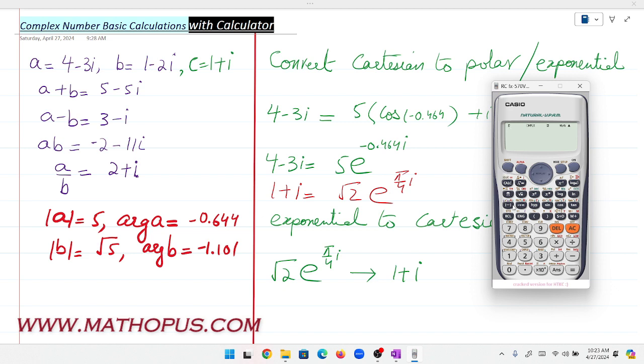First, go to the complex menu. Press 2, then 1 to choose argument. Enter whichever complex number you want—let's substitute A. The argument is -0.4644.